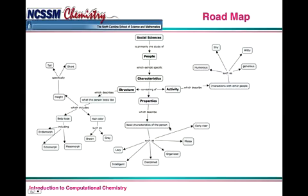Structure is what the person looks like. Properties is the basic characteristics of a person. You can see some descriptors down here below. And activity is describes how this person interacts with other people. They're humorous, they're shy, they're witty, they're generous, whatever the case may be.